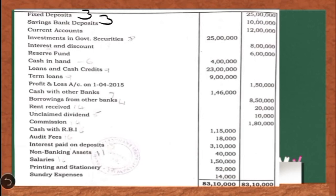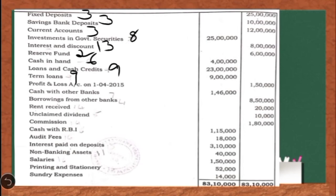Fixed deposits should be shown in note number 3 under deposits. Savings bank deposits and current account balances are also kinds of deposits — note number 3. Investments in government securities go in note number 8. Interest and discount is a profit and loss account item, shown in note number 13. Reserve fund should be shown in note number 2 under reserves and surplus. Cash in hand goes in note number 6. Loans and cash credits and term loans are kinds of advances, so they go in note number 9. The profit and loss account balance on 1-4-2015 is the opening balance, to be considered when calculating total profit available for appropriation. Cash with other banks comes in note number 7, and borrowings from other banks in note number 4 under borrowings.